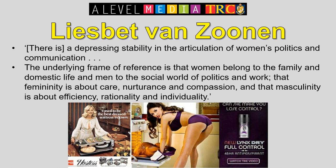Van Zoonen also talks about the depressing stability in the articulation of women's politics and communication. She says: 'The underlying frame of reference is that women belong to the family, to domestic life, and men to the social world of politics and work. Femininity is about care, nurturance and compassion; masculinity is about efficiency, rationality and individuality.' Looking at two adverts — one from the 1970s and one from the 21st century — if anything, the modern one is worse. Both depict women in domestic situations, both pretty and objectified. But the modern one is far worse, as the woman is basically bending over in her underwear — actually much more misogynistic. Things don't necessarily get better with time.